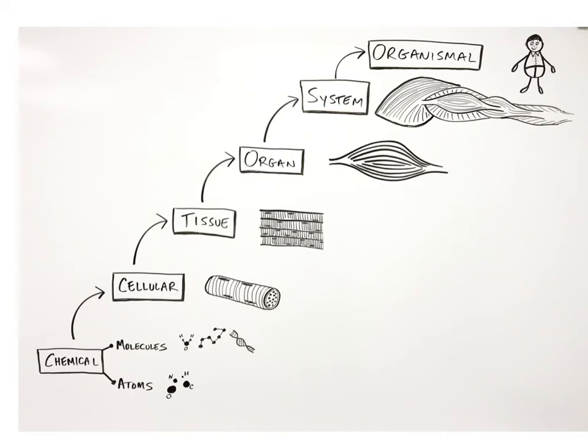The sixth and final level of organization is the organismal level, which is the entire living organism, our own human body, with all of the systems working together as a unit to keep us alive.